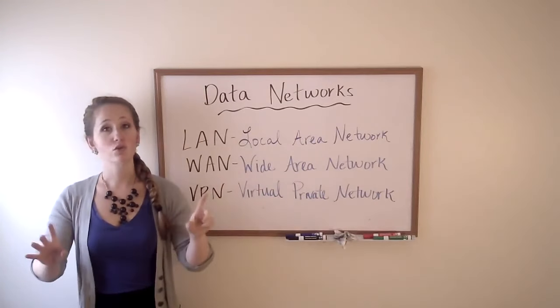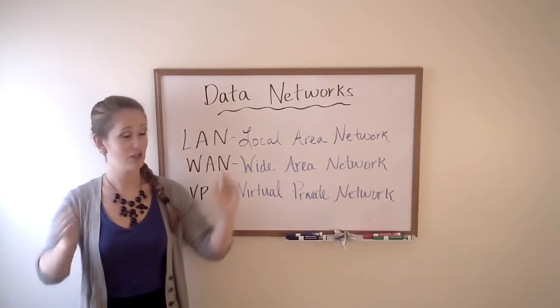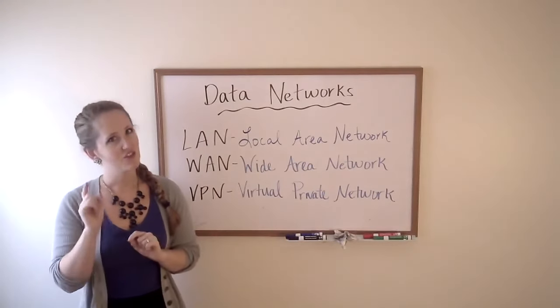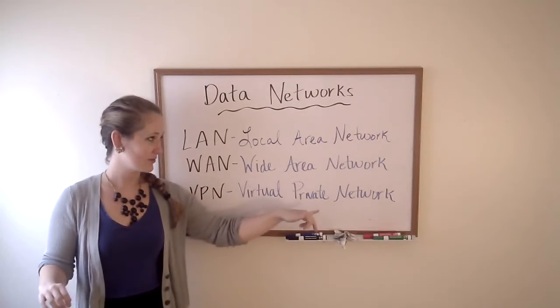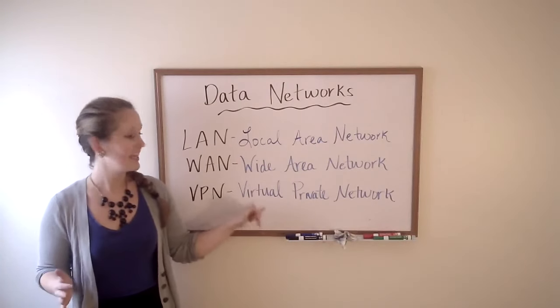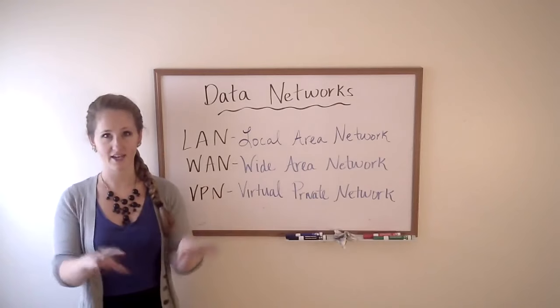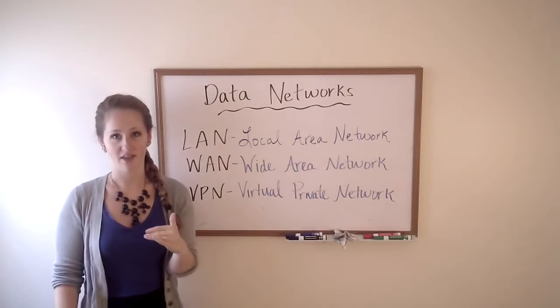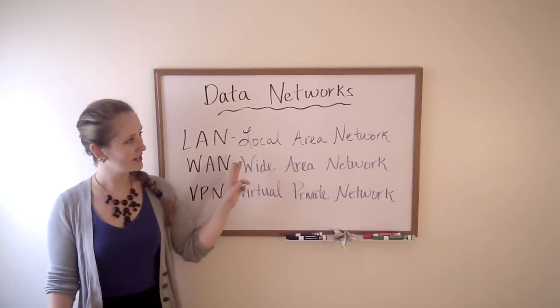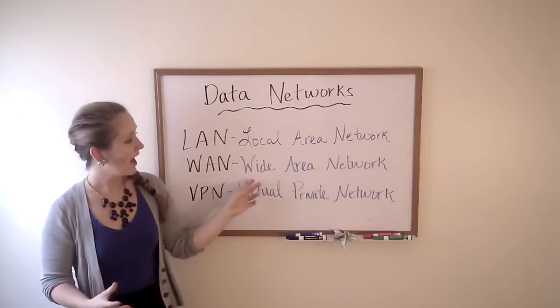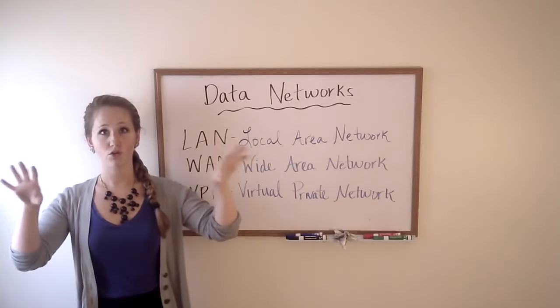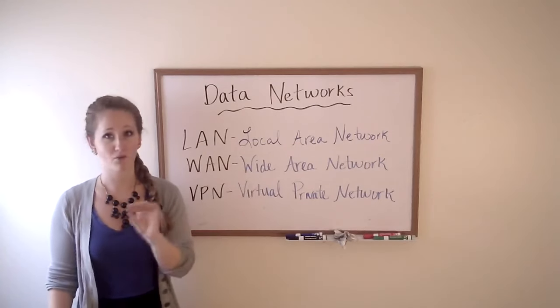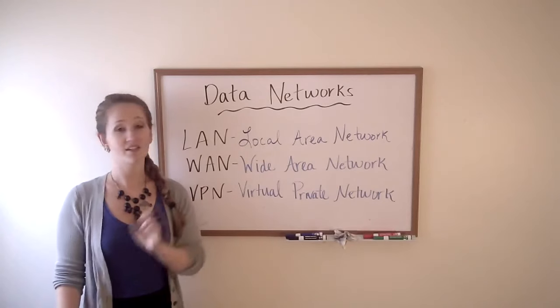A wide area network is two local area networks that have been connected over a long distance. So maybe a school in Colorado wants to connect with a school in Missouri. They could use a wide area network. You might think that those are connected over the internet, and in the case of a virtual private network, which accomplishes basically the same thing as a wide area network, it is. VPNs use the internet to connect their two local area networks. However, a wide area network will usually rent a cable from an internet company and connect that way. So just to review, a local area network is a group of computers connected close to each other. A wide area network and a virtual private network are two local area networks or more that have been connected over long distances. The wide area network accomplishes this by renting a line from an internet company, and a virtual private network does it over the internet.